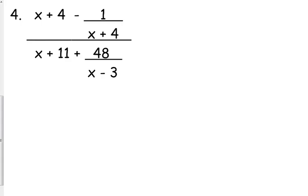x plus 4 minus 1 over x plus 4 all over x plus 11 plus 48 over x minus 3. So, we have two distinct denominators here, x plus 4 and x minus 3. The first two expressions in the numerator and the denominator have a denominator of 1.